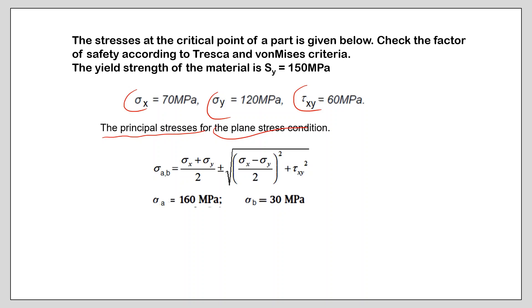In this plane stress condition, we can use Mohr's circle or a formula giving the principal stresses in the plane. Sigma x, sigma y, and tau xy are known. Using these numerical values, the principal stresses in the surface are found to be 160 and 30 MPa. We also know that there is a third principal stress perpendicular to the screen, which is zero.